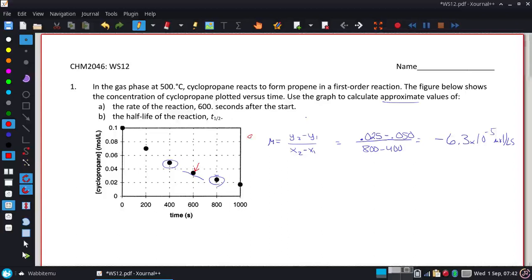All right. B is actually kind of easy. B is kind of easy because it just wants to know what the half-life for the reaction is.